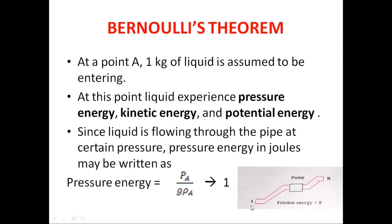At point A, one kilogram of liquid is assumed to be entering into the pipeline. At this point A, the liquid experiences pressure energy. We can write it as P_A divided by g·rho_A. P_A is the pressure at point A, g is the acceleration due to gravity, and rho_A is the density of the liquid at point A.